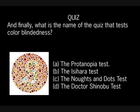Finally, what's the name of the test that tests color discerning abilities and detects color blindness? A. Protonopia Test. B. The Ishihara Test. C. The Knots and Dots Test. Possibly. Or D. The Dr. Shinobu Test.